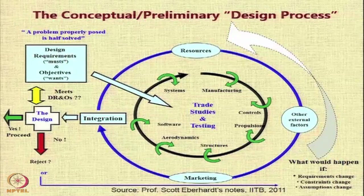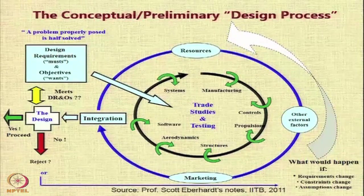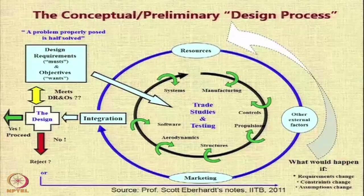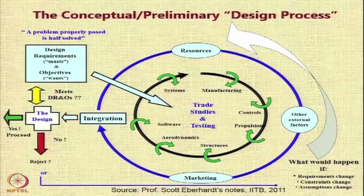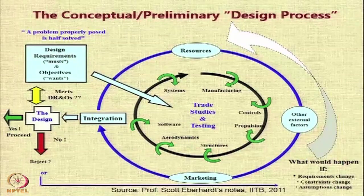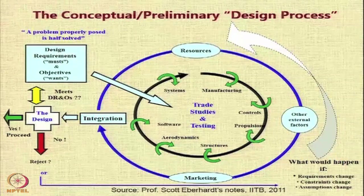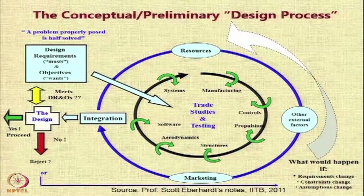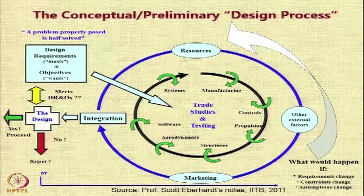There is an inner loop where trade studies and testing take place, where systems, manufacturing, controls, propulsion, structures, and aerodynamic software all play a role to ensure that the musts — the design requirements — and the objectives — the wants — are addressed. If you properly pose a problem, you have solved half the problem. The design is checked against requirements and objectives; if it does not meet them, you proceed to refine or reject. This entire process is encompassed inside an outer ring limited by constraints from resources, external factors like the regulatory environment, and integration.